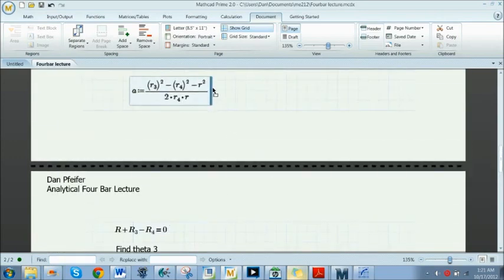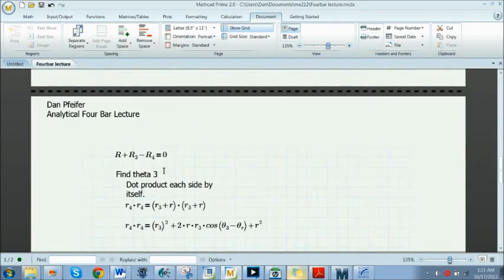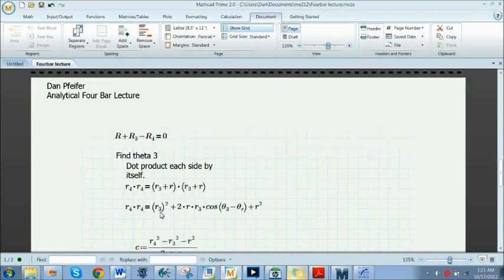We make our vector loop and we want to find theta 3. So the first thing we do is isolate R4 by itself, move it to the other side, and you end up with R plus R3 or R3 plus R - it's commutative so it doesn't matter. What you want to do here is you dot product each side by itself, so you end up with R4 dot R4. Since the cosine of the angle between them is 0, then that term goes away, so we don't need to know theta 4. Then we foil this out and you end up with this term right here.